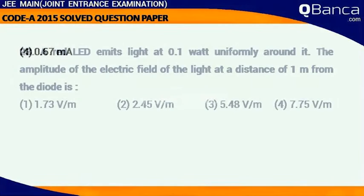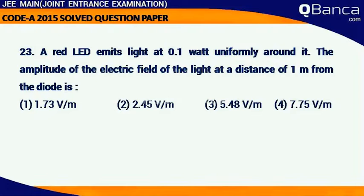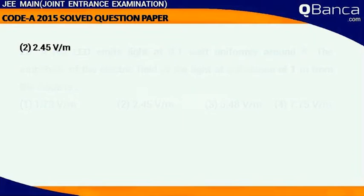A red LED emits light at 0.1 watts uniformly around it. The amplitude of the electrical field of the light at a distance of 1 m from the diode is answer 2.45 volt per meter.